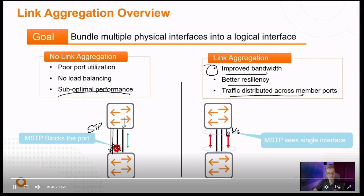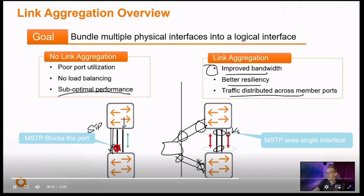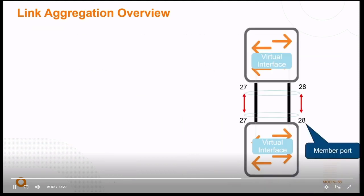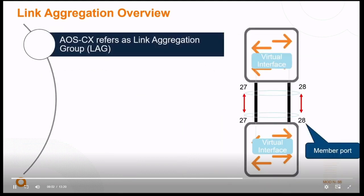This way we can still run spanning tree — it still protects us when we have links to a third switch, disabling those links, while allowing high-speed connections between our remaining switches. With CX, we refer to a link aggregation as a LAG — L-A-G, link aggregation. You can use the term link aggregation and every vendor will know what you're talking about, though other vendors have other names.